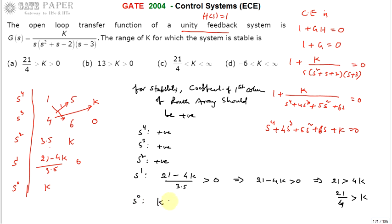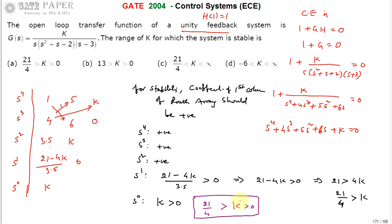For the S⁰ row, the coefficient is K, which must be positive, so K > 0. Combining both conditions from S¹ and S⁰, the range of K for which the system is stable is 0 < K < 21/4. Therefore the correct answer is option A.